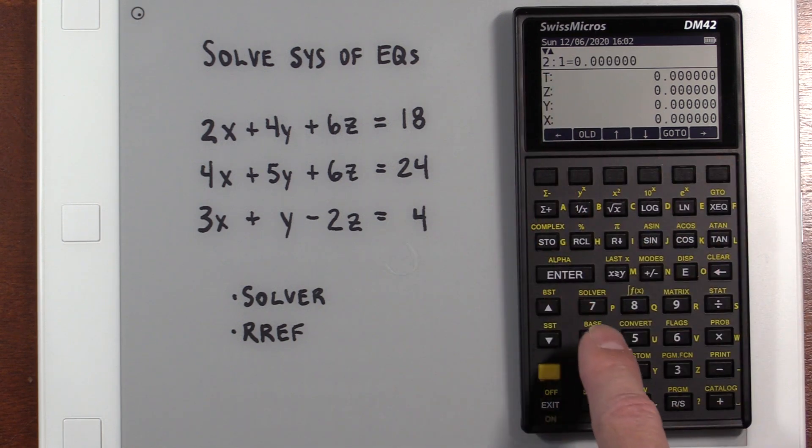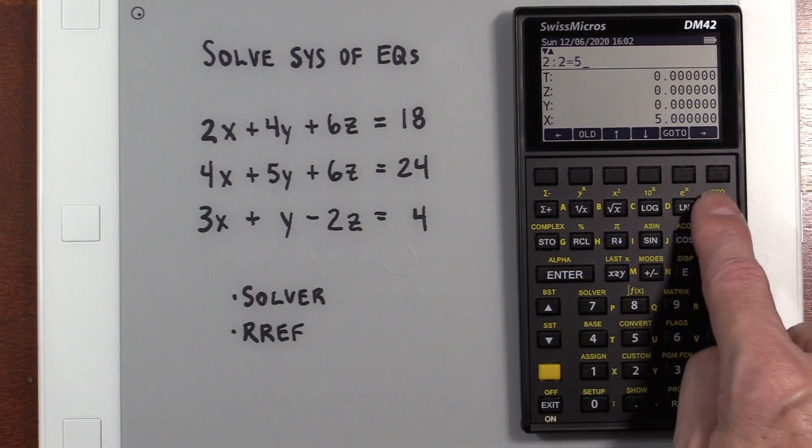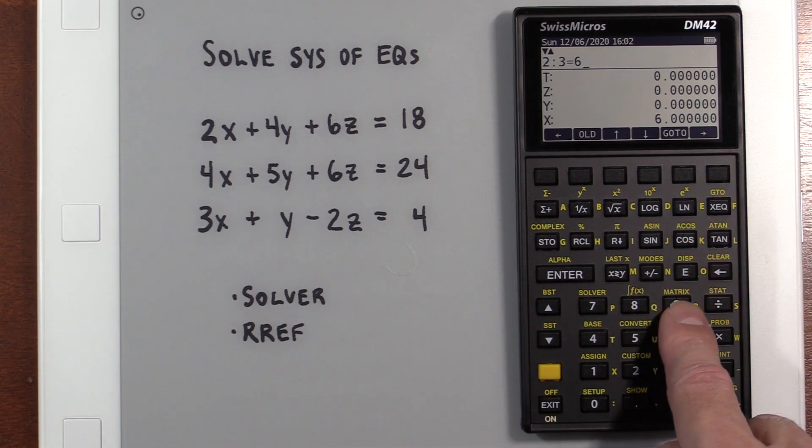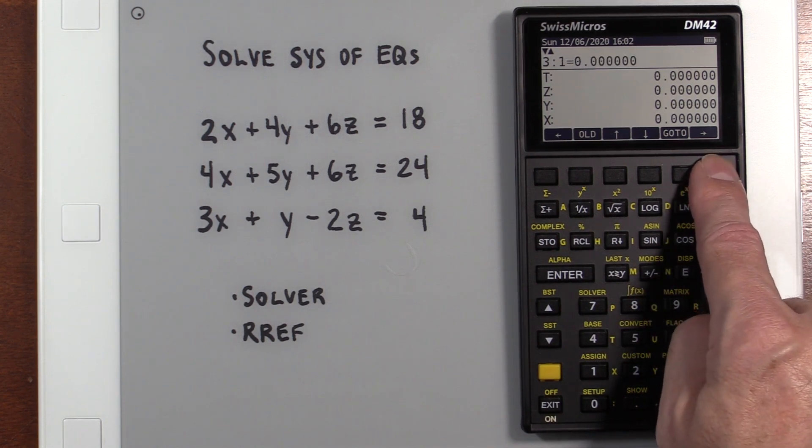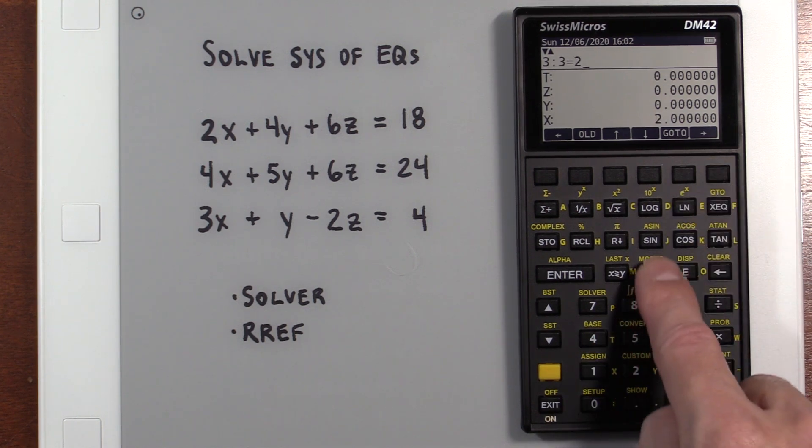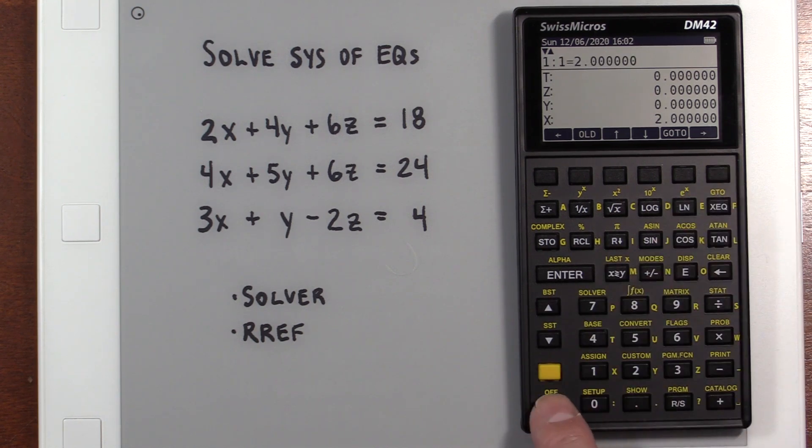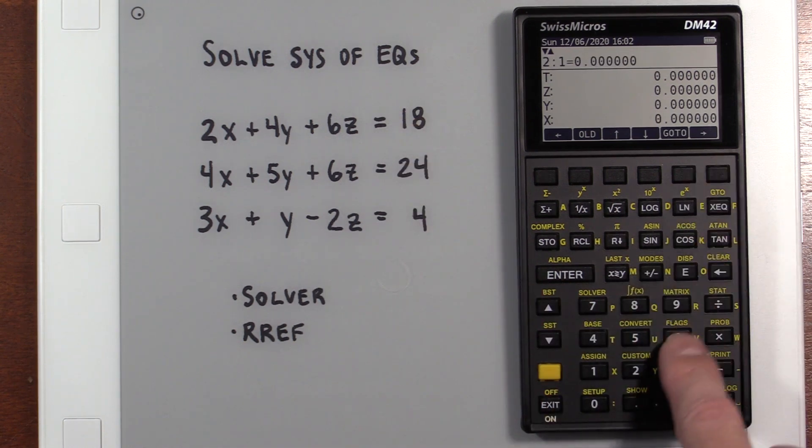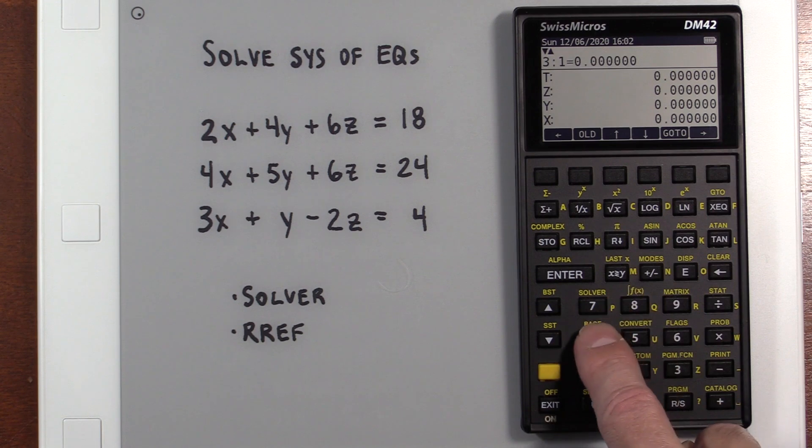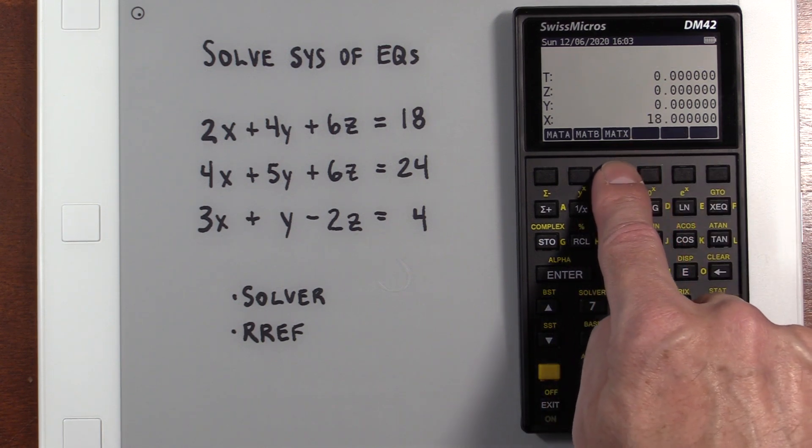Now it goes down to the second row, first column. Four, five, and six. And then our third row. We want a three, a one, and a negative two. And once we've got that entered, we go into matrix B, which is our constants here. So we're going to put in our 18, a 24, and a four. To get the solution, we just hit matrix X.